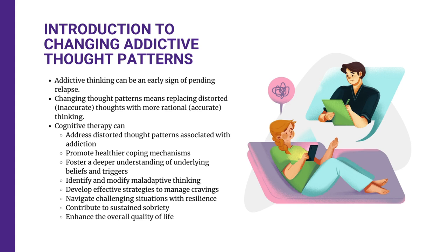Transforming thought patterns involves substituting distorted thoughts with a more rational and logical thinking process. Distorted thoughts typically defy logic and overlook factual evidence. On the other hand, rational thoughts are grounded in reality and serve to reinforce decisions to maintain sobriety.